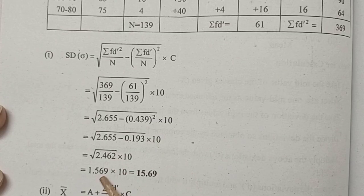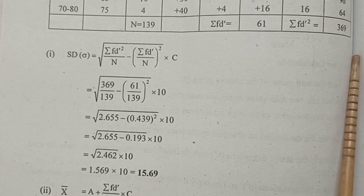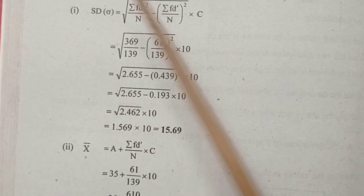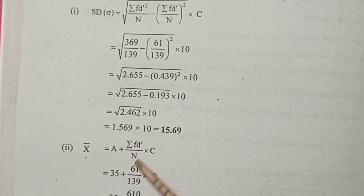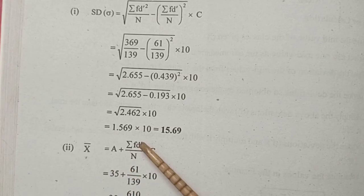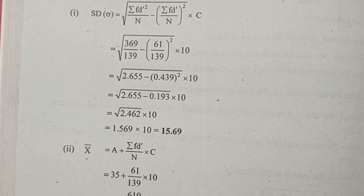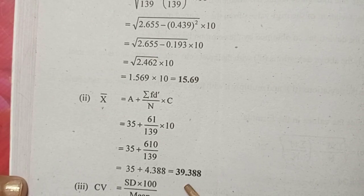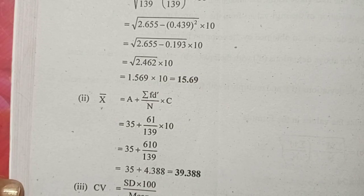Multiply the result by c (class interval) to get the standard deviation. For the coefficient of variance, the mean is calculated as: assumed mean plus sigma fd divided by n, multiplied by c, giving 39.388. The coefficient of variance is 39.8683 percent.